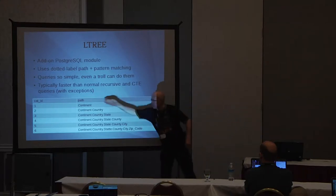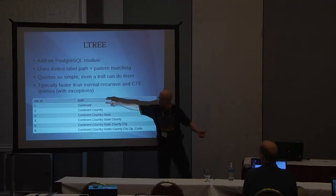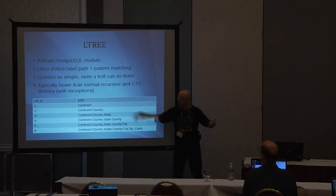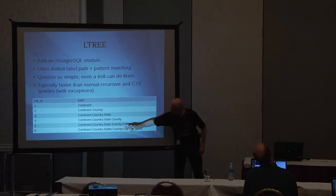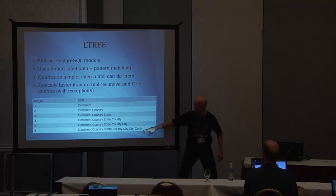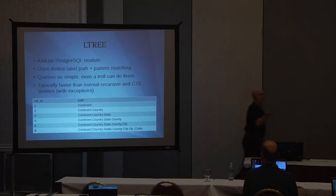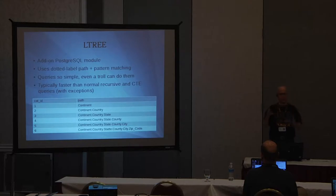Look at what I did here: I created a separate table for the taxonomy with a primary key and a path. Continent, continent.country, all the way down to continent.country.state.county.city.zip_code. You can't have any spaces, you can't even use a dash — you have to use an underscore. So if you want to separate names to make it more readable, use an underscore. That's actually important to note.